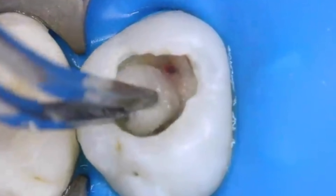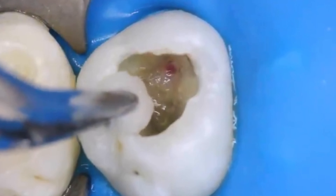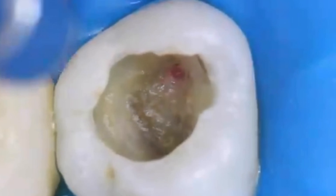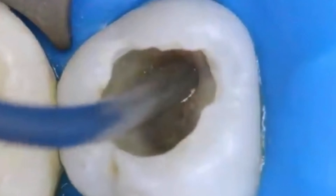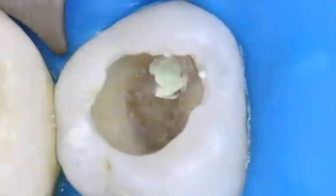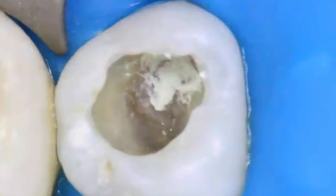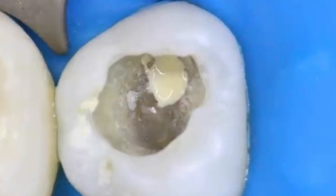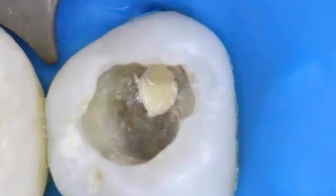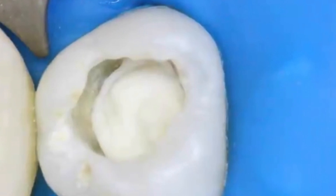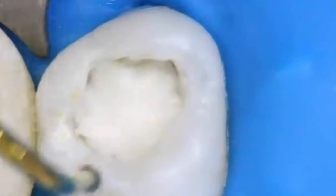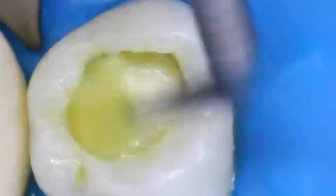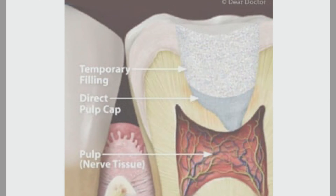Direct pulp capping is a nice option to save the pulp tissue, with a hard tissue barrier hopefully forming within 6 weeks. Compared to indirect pulp cap, direct pulp cap has a less favorable prognosis because instead of maintaining a thin dentine partition, we are relying on odontoblasts to create a tertiary dentine bridge. The deeper we are, the less favorable the prognosis.